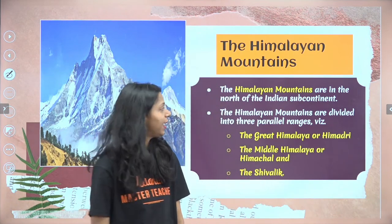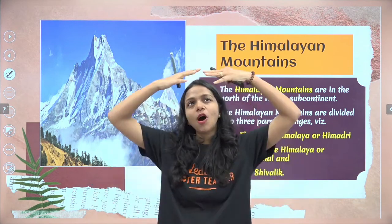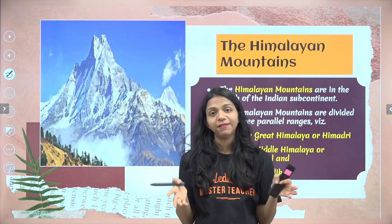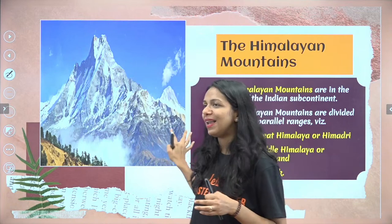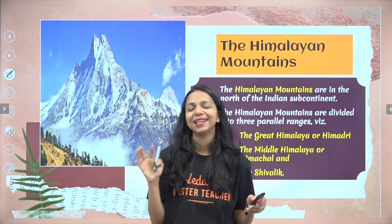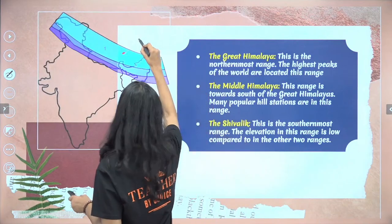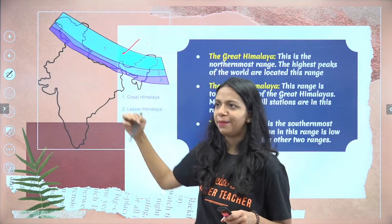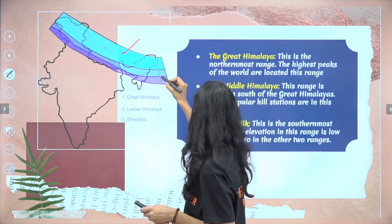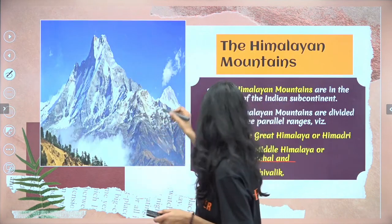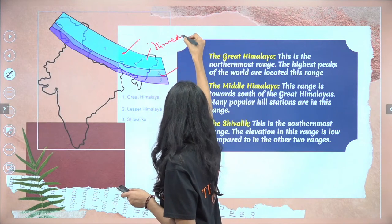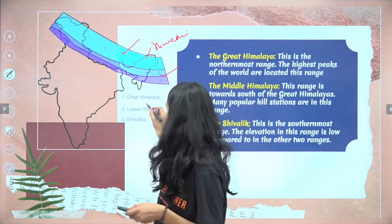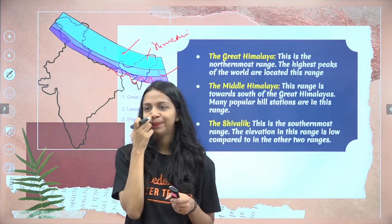The Himalayan mountains are our country's security guard. Because of these mountains, the cold air coming from the polar regions does not enter India. Today we will cover 3 divisions of the Himalayas. The first is the Great Himalayas — also called Himadri — which are the highest in the world, containing peaks like Kanchanjunga and Mount Everest. Then you have the middle Himalayas, also called Himachal. And then you have the Shivaliks — the smallest mountains, with the least height compared to the other two ranges.